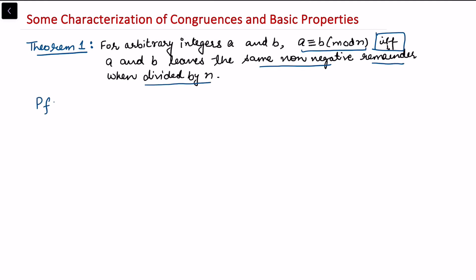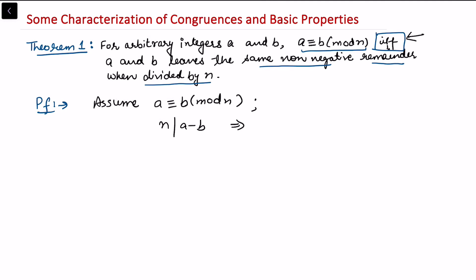Now let us do the proof. I will first assume that a is congruent to b modulo n and then show that the remainder is the same. Assuming that a is congruent to b modulo n, by the definition of congruence, n divides a minus b. This implies that a is equal to b plus kn for some integer k.